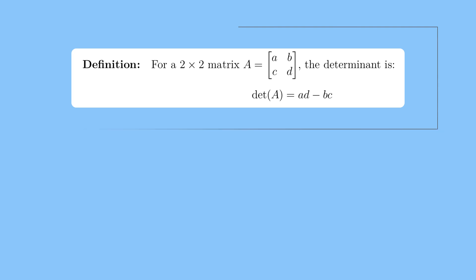The determinant is mathematically defined as a scalar value that encapsulates key geometric properties of a transformation. For a 2×2 matrix with entries a, b, c, and d, the determinant is calculated as a×d - b×c.